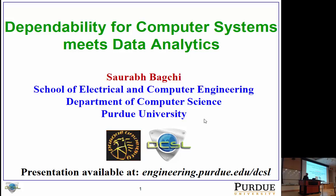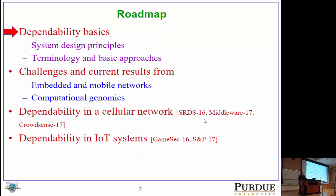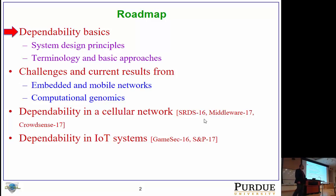This presentation is available from that website if you go to the presentations section. I'm going to spend a little time on the basics of dependability, the broad research directions in this field, then do a quick overview of how dependability and data analytics come together in embedded wireless networks, embedded mobile networks, and computational genomics. Then I'll do a deep dive into dependability in cellular networks and IoT systems.